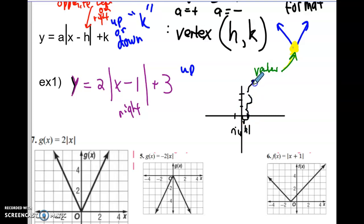It goes up, and then you have a V. That's your absolute value. The vertex is going to be positive 1, 3. And that's how it's done.